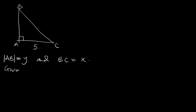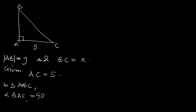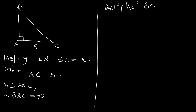We are given AC equal to 5. We are asked to find the area of the triangle. In triangle ABC, angle B is 90°, so this is a right-angle triangle, meaning that the Pythagorean theorem will work.